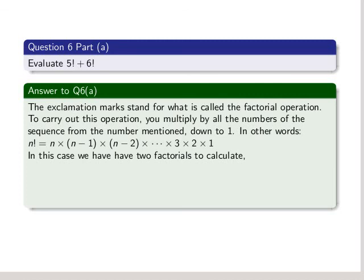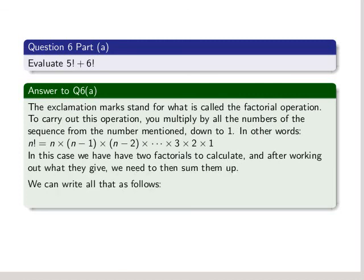In this case, we have two factorials to calculate, and after working out what they give, we need to then sum them up. We can write that all as follows: 5 factorial is 5 by 4 by 3 by 2 by 1, and then we have to add that to 6 factorial, which is 6 by 5 by 4 by 3 by 2 by 1. We first do the multiplications. We get 120 for 5 factorial and 720 for 6 factorial. We add those together and we get 840. That's the answer to part A.